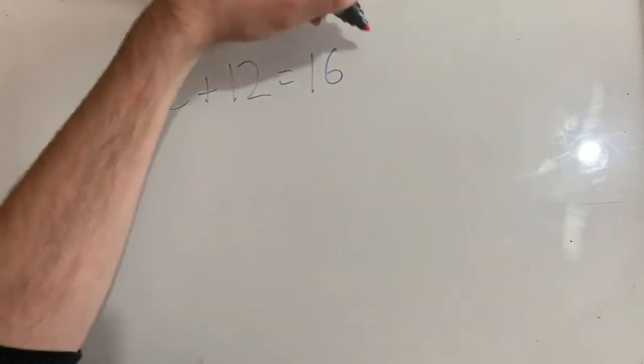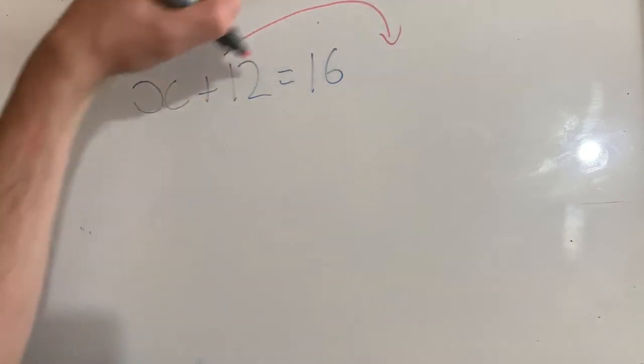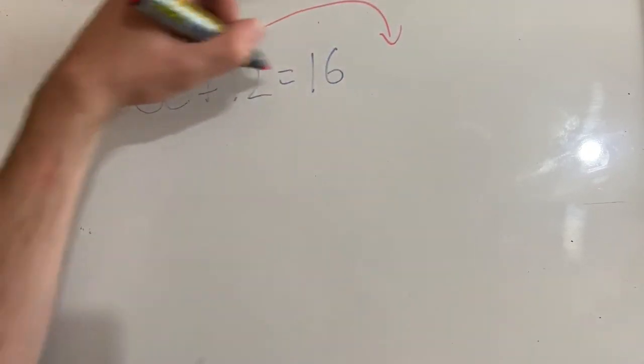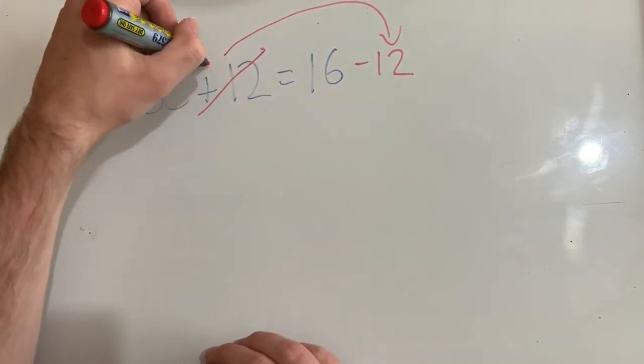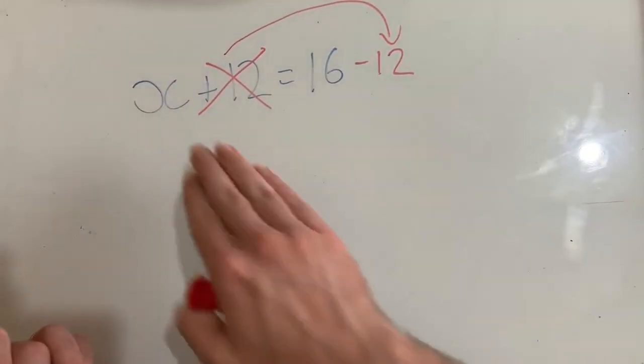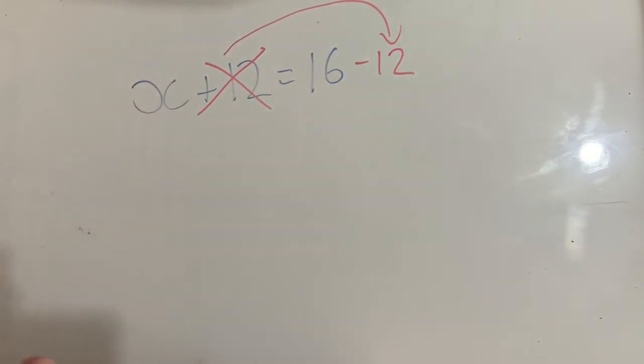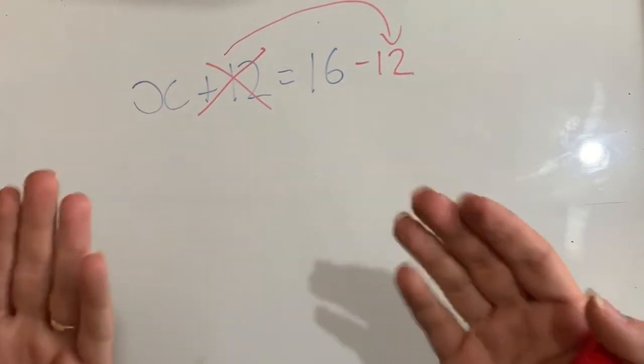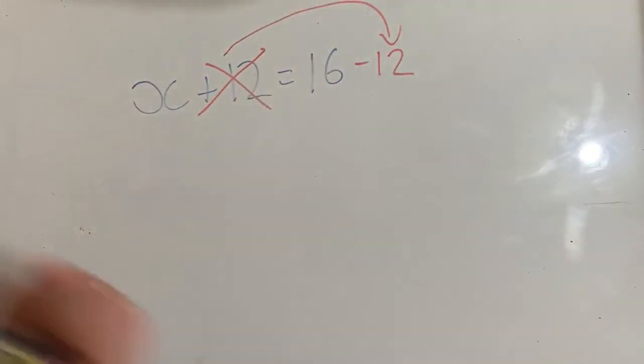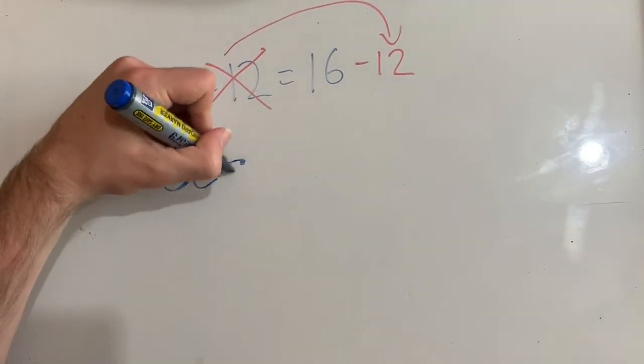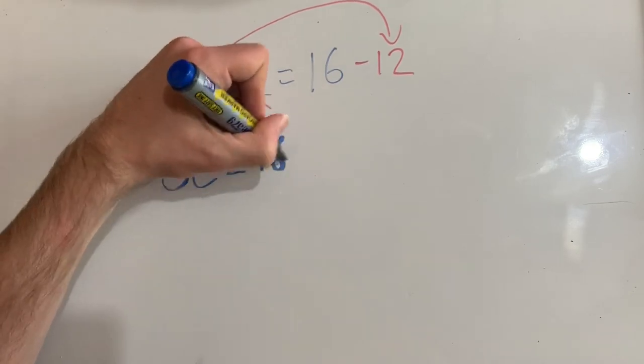I need to not add it on this side. I need to take it away. When I take it away on this side, I can take it away on this side because I'm balancing them out. If I take 12 from one side of the scales, I need to take 12 from the other side to make sure that the scales are still in balance. So now I've got this equation: x equals 16 minus 12.